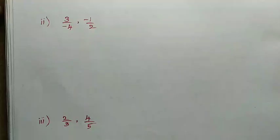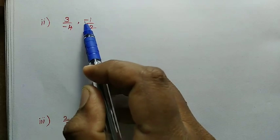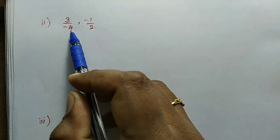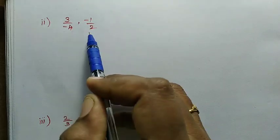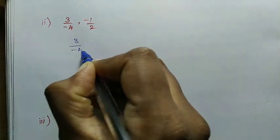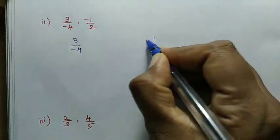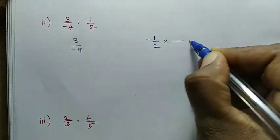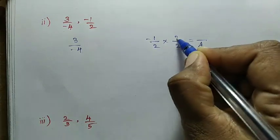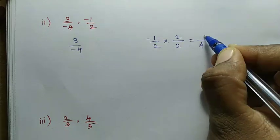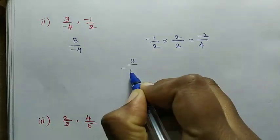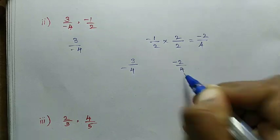Second question: minus 3 divided by 4, then minus 1 divided by 2. We compare the two rational numbers. The denominators are 4 and 2, so the LCM is 4 — no full LCM calculation needed since 2 is easier to change. For minus 1 divided by 2, we multiply numerator and denominator by 2 to get minus 2 divided by 4. Now the denominator value is common: minus 3 divided by 4, then minus 2 divided by 4.